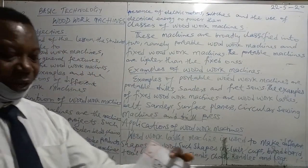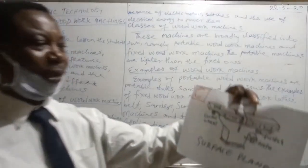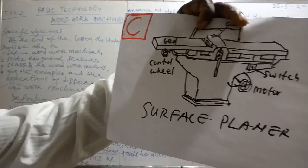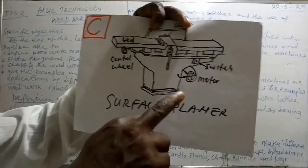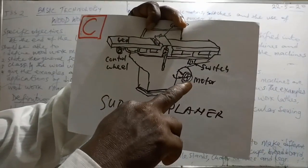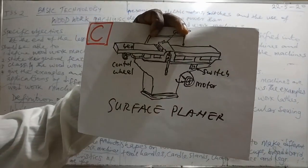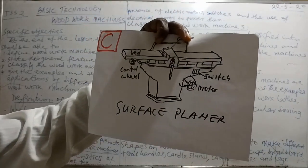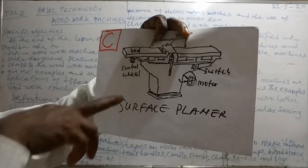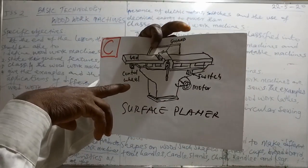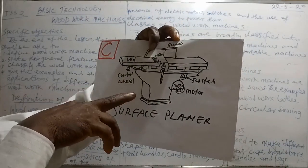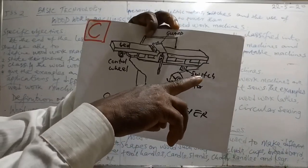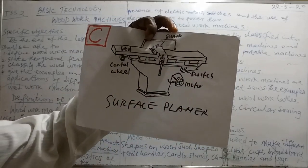Thirdly, we have the surface planer. And this surface planer, as you can see, we have the motor here, powered by electricity. Then we have a place we call the control wheel. You also have the switch as well, as I have earlier mentioned.